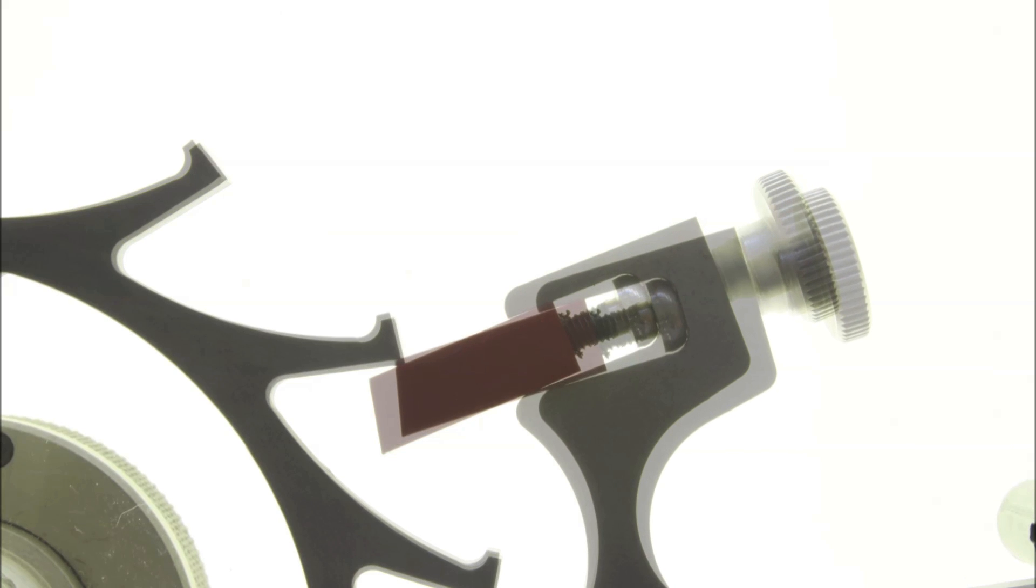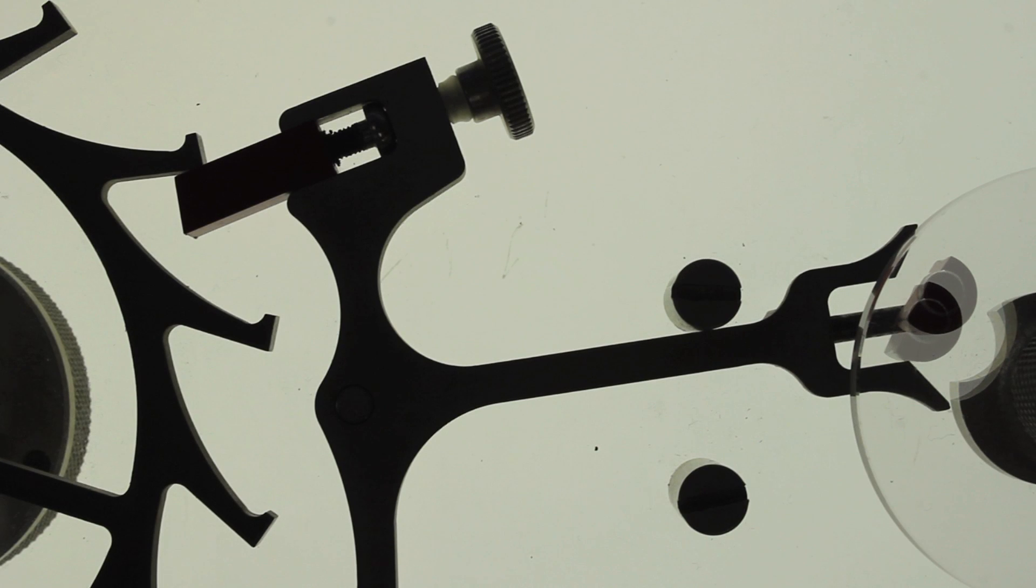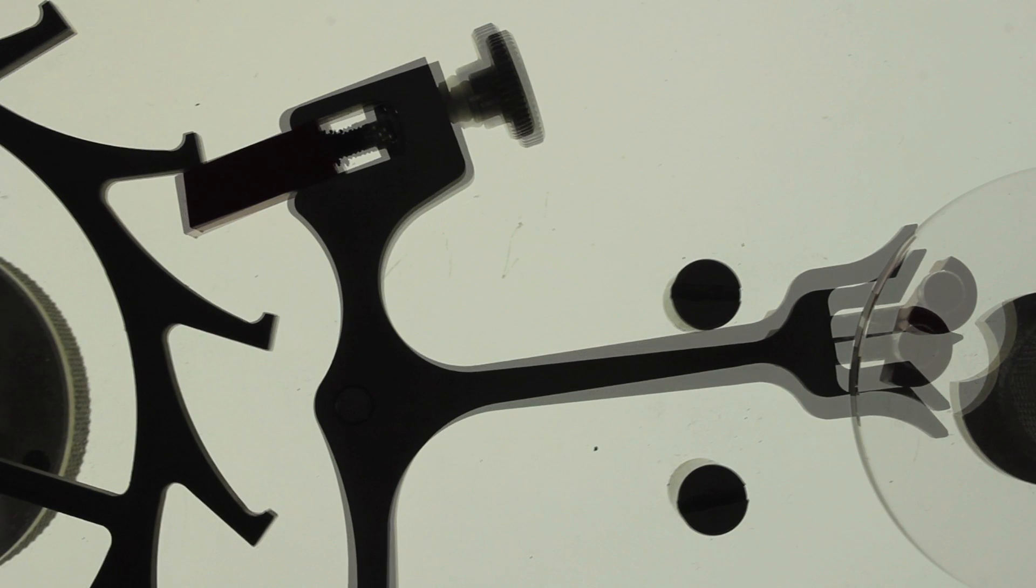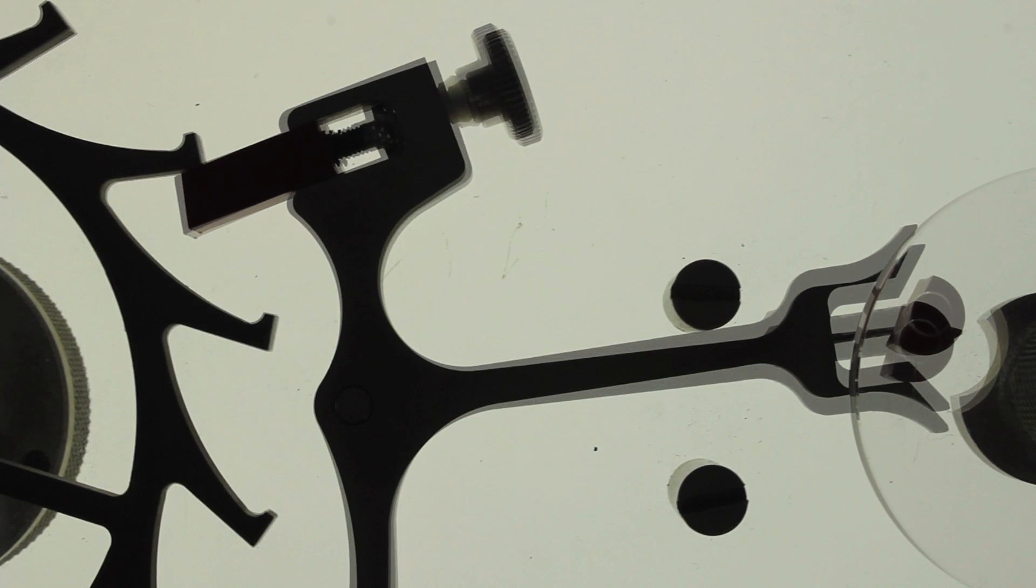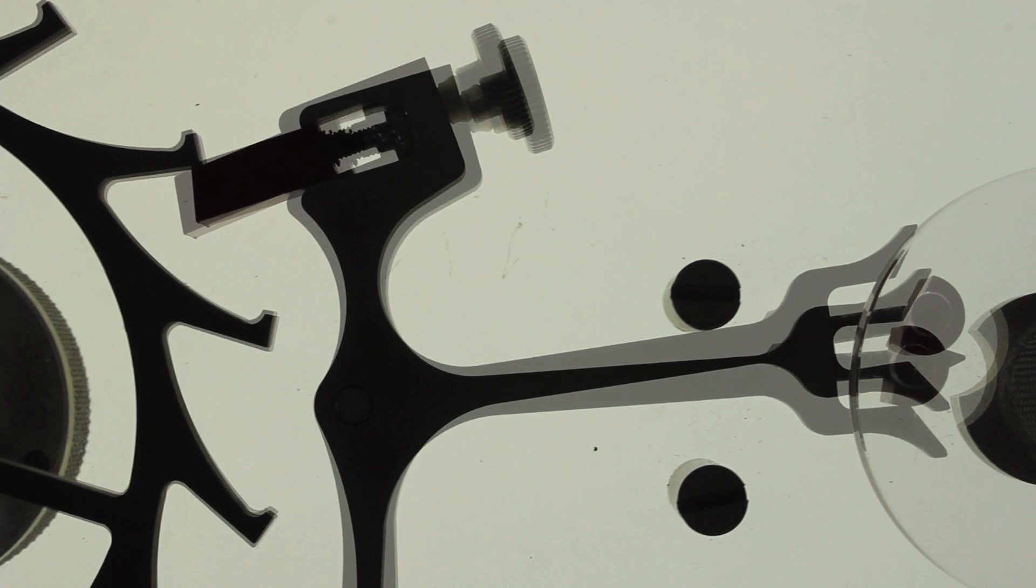As discussed, this recoil occurs because of the angles of geometry of the escapement. Take note that while the escape wheel tooth and locking plane are in contact with each other, the amount the escape wheel recoils is the same regardless of how slow or fast the unlocking occurs.